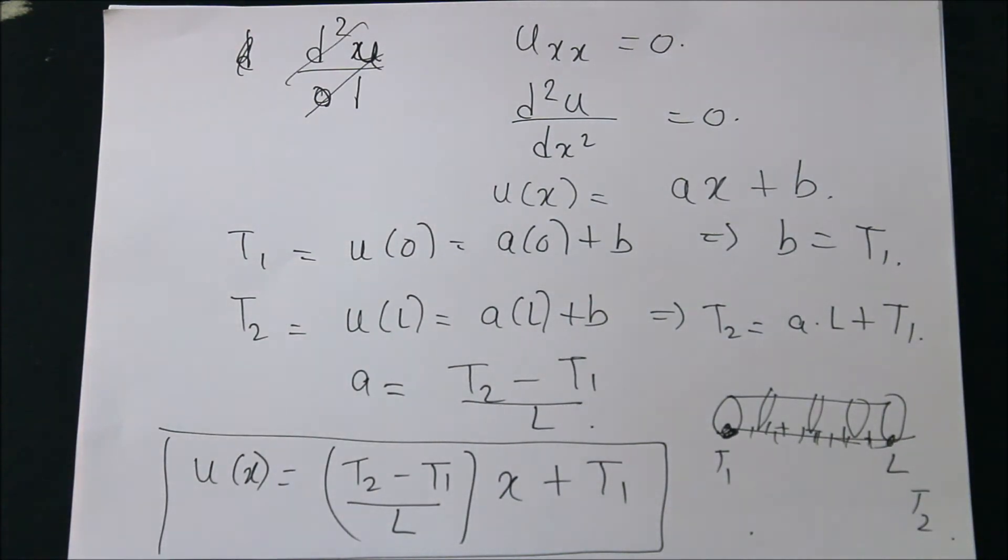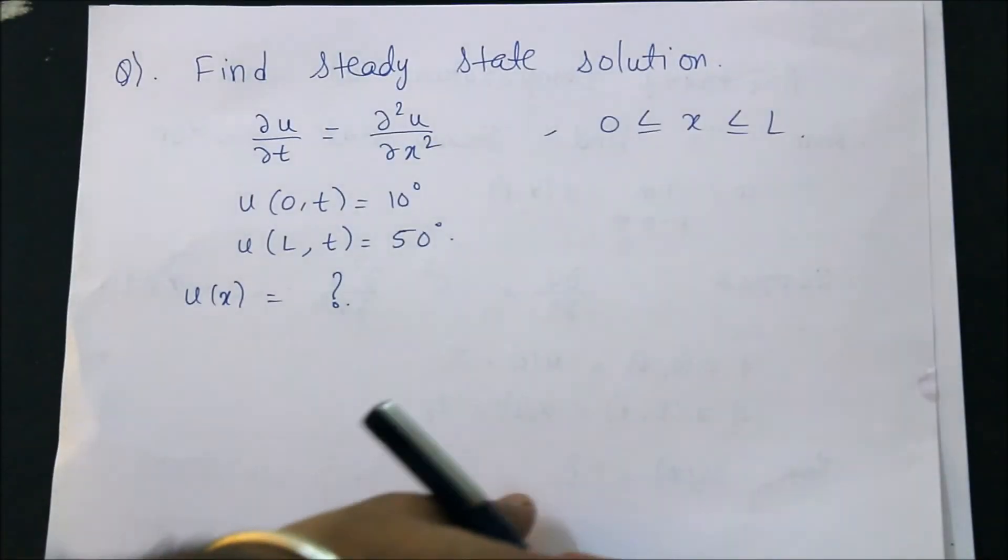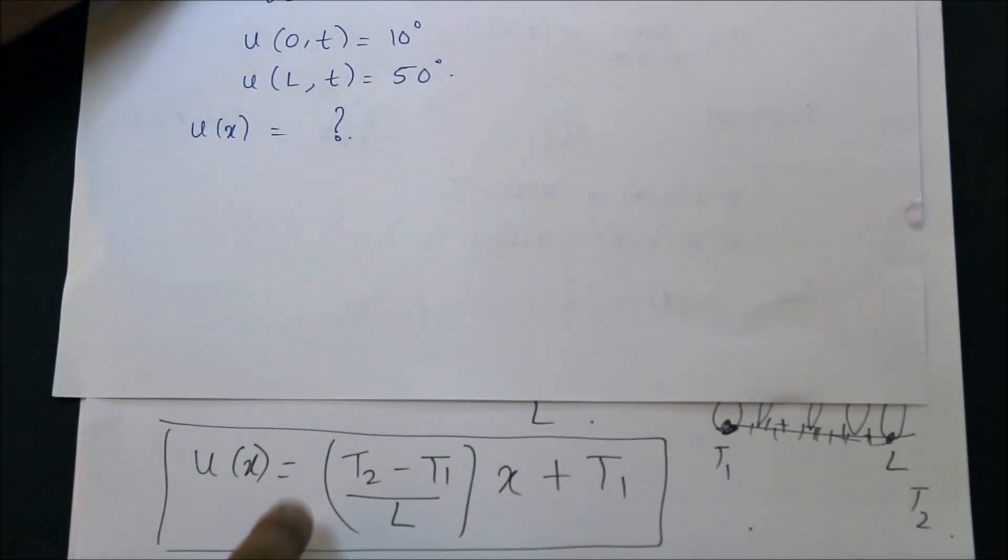If you want to take one small example, suppose your c is one, you have a rod of length L. At the left-hand point, the temperature is 10 degrees Celsius or Fahrenheit, and the right-hand side is 50 degrees. What is the solution? What is my U of X?